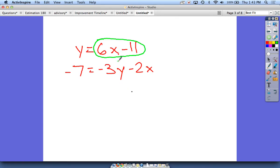Replace y with these numbers. It's going to look like this: negative 7 equals negative 3, and then here is where this goes because it goes in for y, 6x minus 11 minus 2x.